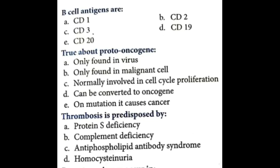Hello friends, let us now learn some important points about previous year questions in PG. B-cell antigens are CD-19 and CD-20. True about proto-oncogene: proto-oncogene is not only found in virus — that is false.